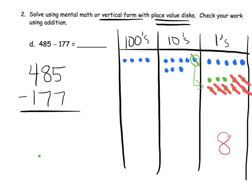Now in our tens column we have 7, and it says take away 7 — that's pretty straightforward. We take away all 7, so what are we left with in the tens column? A big zero — nothing in the tens column. Don't forget, the green one got unbundled into the ones column, and the remaining 7 all got crossed off. Then in the hundreds column, it says we have 4 hundreds — take away 1 hundred. We just cross off one, leaving us with 3 in the hundreds column.